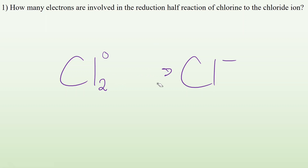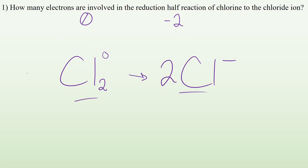When I end up with the chloride ions, I'm going to end up with two of them. I can't just start with Cl₂ and end up with one Cl — I can't make things disappear. I've already made sure that my atoms are balanced: two chlorine atoms on the left and two chlorine atoms on the right. Now look at the charge — on the left I have a charge of zero, and on the right I have a total charge of minus two. I'm going to balance charges by adding electrons. Electrons have a negative charge, so I can't make anything more positive, but I can make one side more negative. To bring zero down to minus two, I'm going to add two electrons to the left side. Now the charge on the left equals the charge on the right.